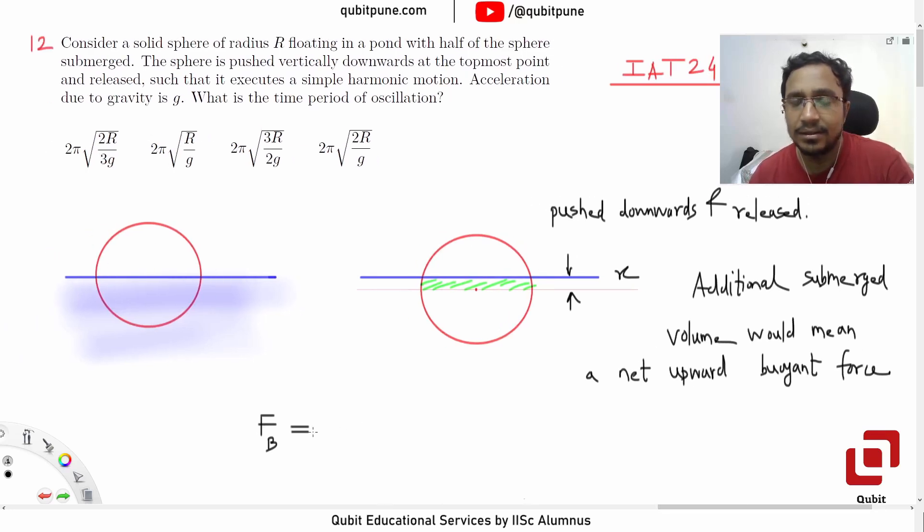Student asks: In the earlier case when it was half submerged, simple harmonic motion was not executed because the buoyant force was being balanced by gravitational force. Okay sir.